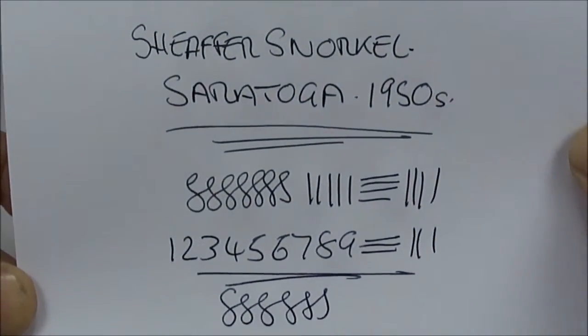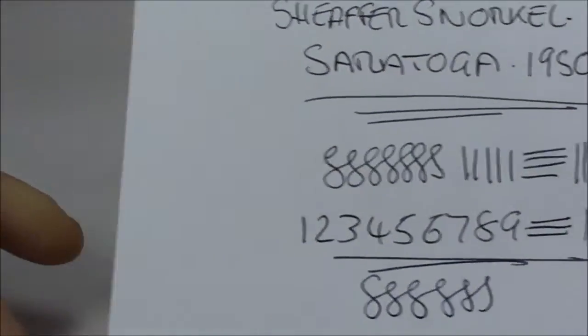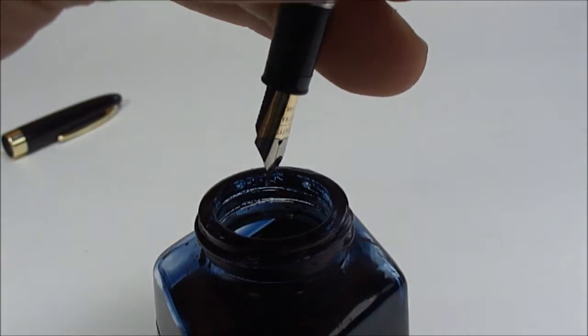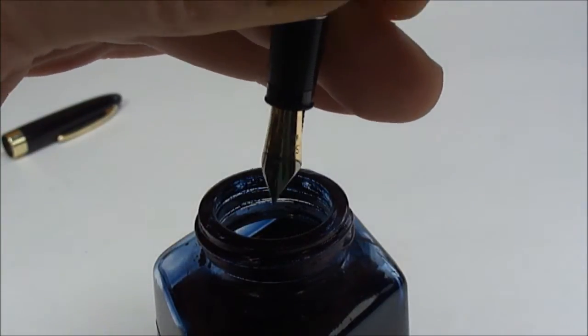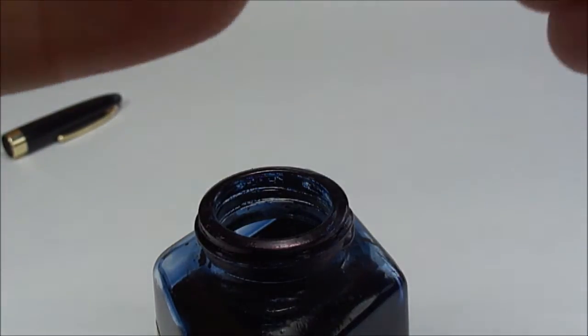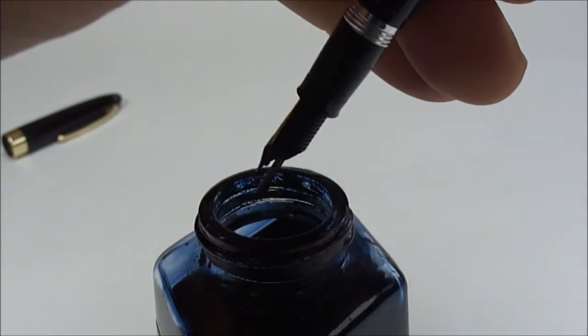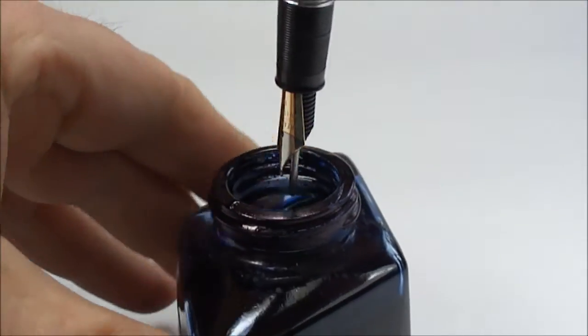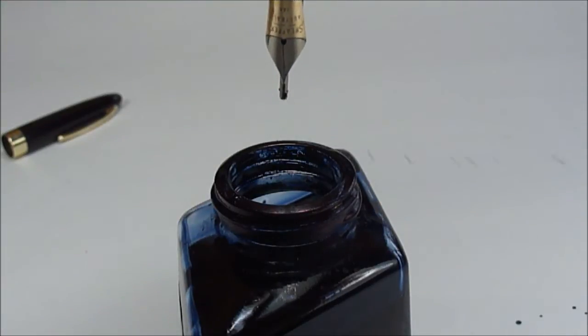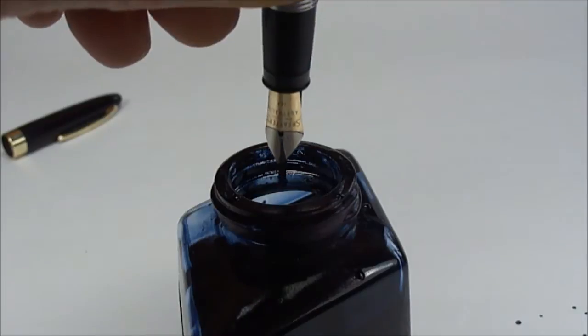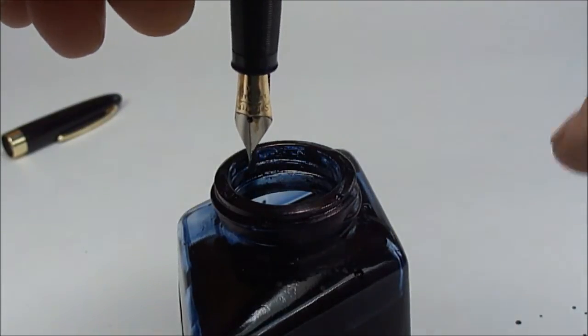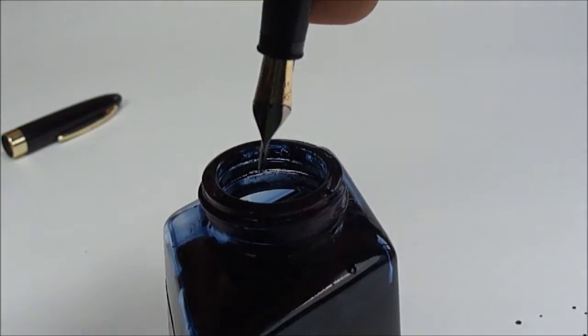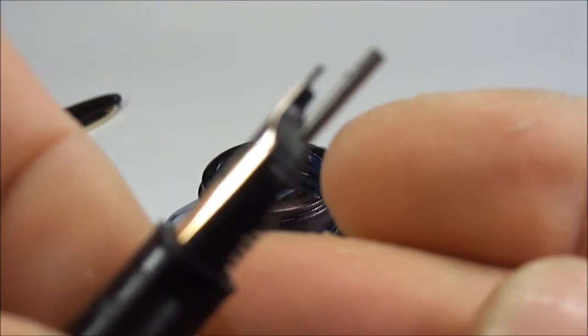So let's show you the writing sample, lovely writer, nice fine line. And then what we actually do to empty the pen is we undo the snorkel. Just if I can do it, just bear with me a second. Oh sorry I've actually forgotten how to use it myself now. So what we do, we unscrew the snorkel like so, pull out the tube. So what I've actually done is you can't see it but just to the side here I've squirted all over my white background which wasn't recommended.